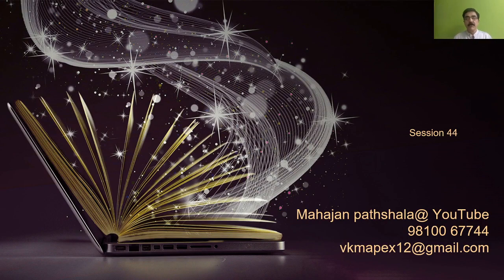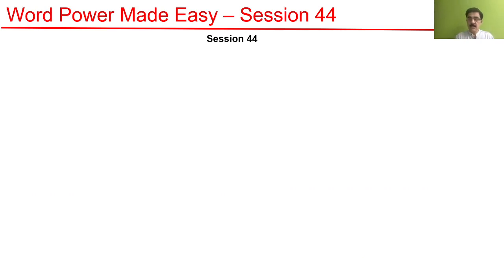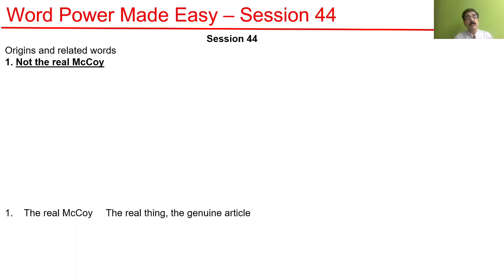Hello students, today we begin session 44. This session has something new — a few new words we've never read before, and a very close relationship between two similar-looking words. Let's understand what the author is trying to explain: 'not the real McCoy.' McCoy used to be a kind of whiskey, and when duplicates appeared under the same name, people started saying 'not the real McCoy' — meaning not the genuine article.